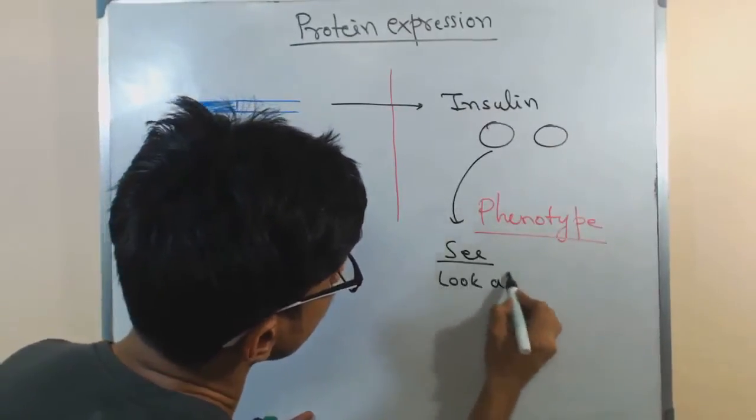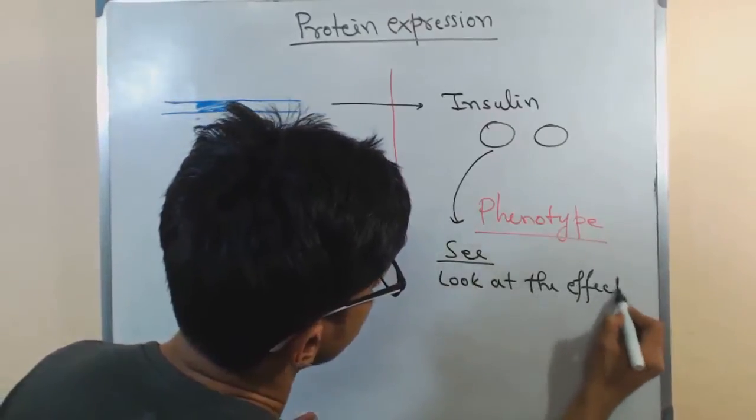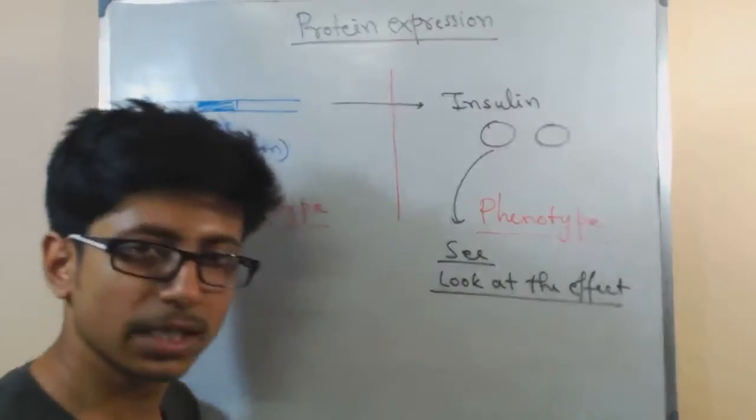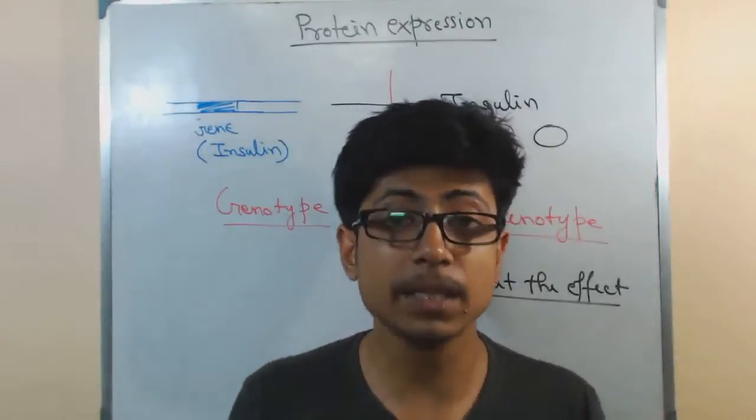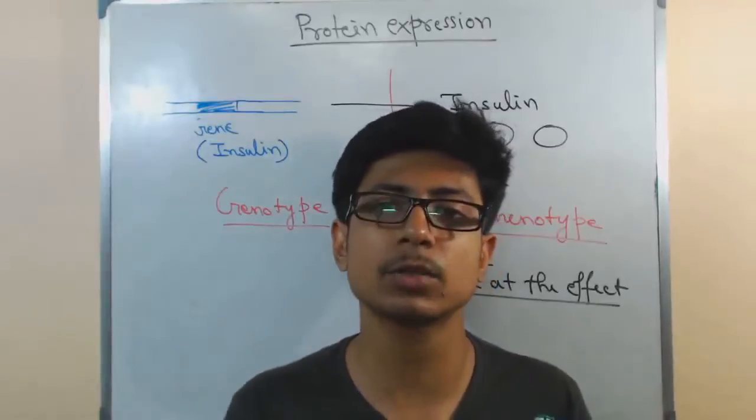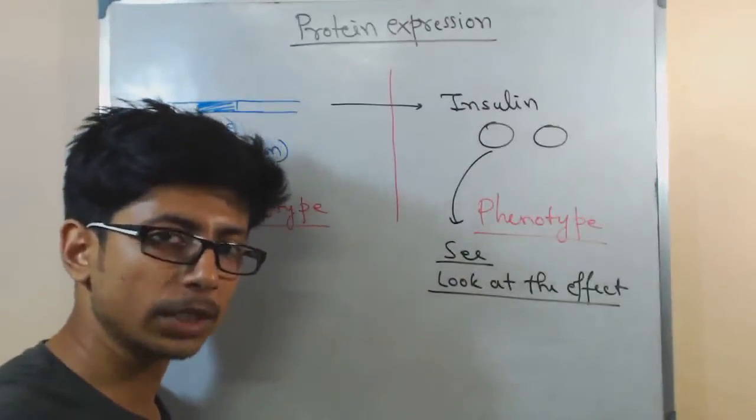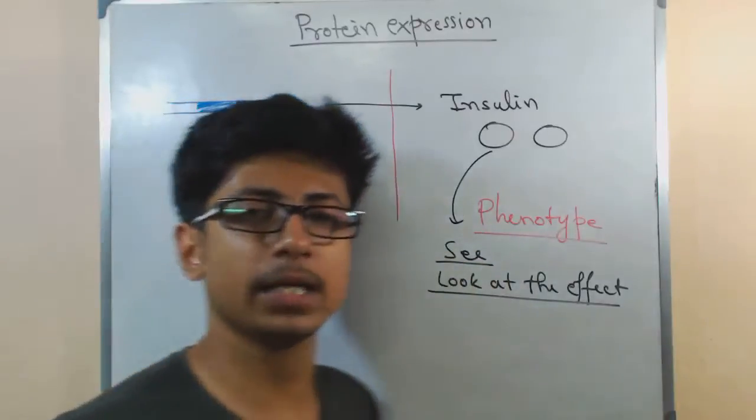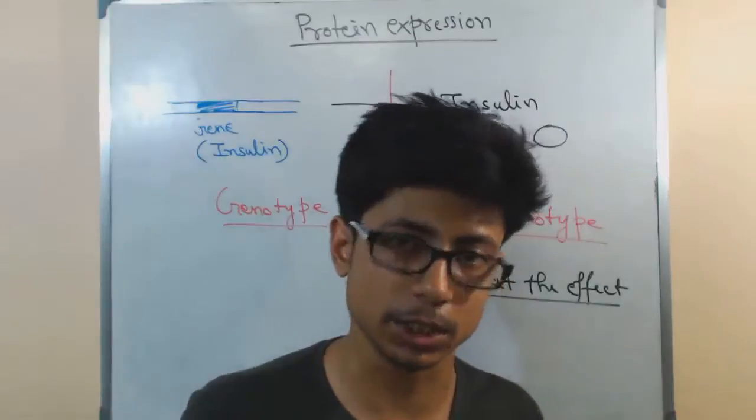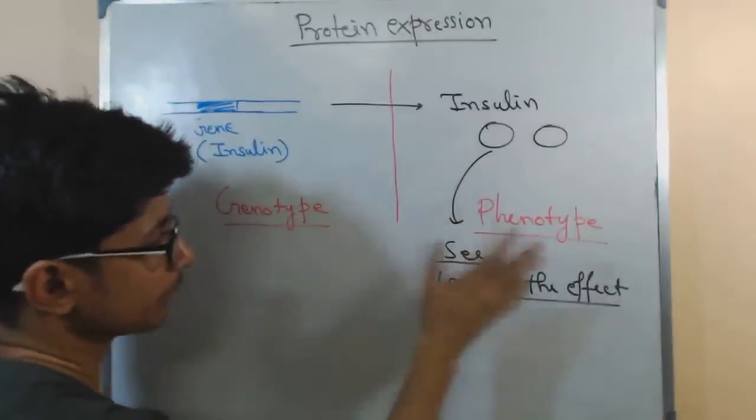Look at the physiological effect. Sometimes we can see things like, let's say if it's a coloration of a flower we can see that. But sometimes you cannot see it but we can actually realize that. For example, if the insulin hormone is present in our body, we can actually realize it by going through the physiological conditions of our body.